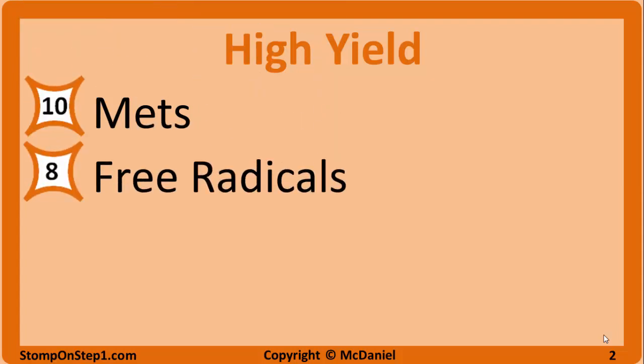Next up with a high yield rating of 8, we have free radicals. You want to know the main enzymes and the free radicals that they either create or destroy. You should focus on the free radicals and enzymes which have some sort of clinical correlation. You're most often going to see questions on chronic granulomatous disease, but you'll also see things like reperfusion injuries after MI or myeloperoxidase deficiency.